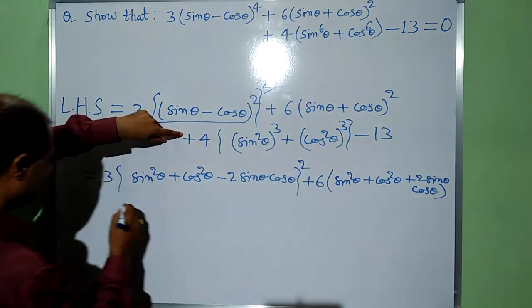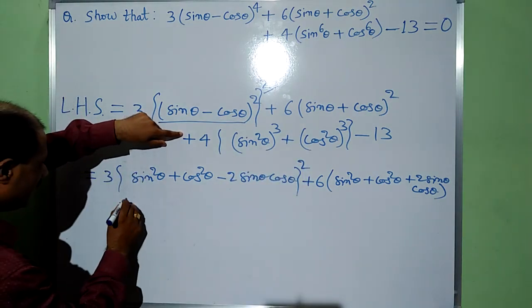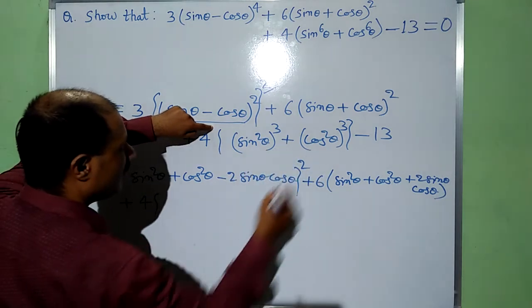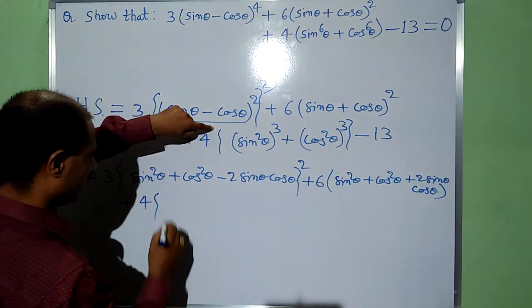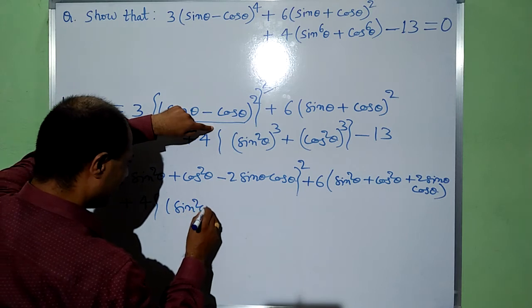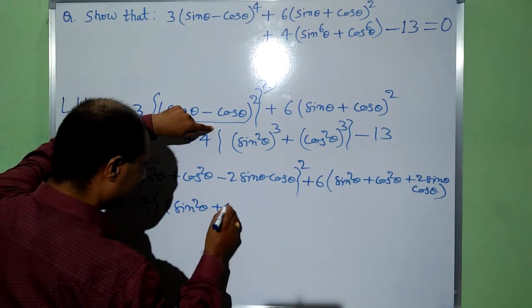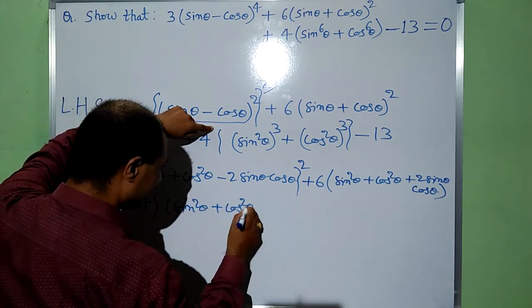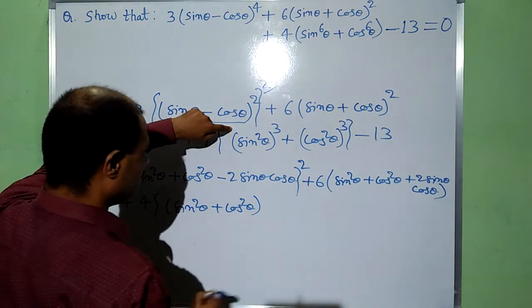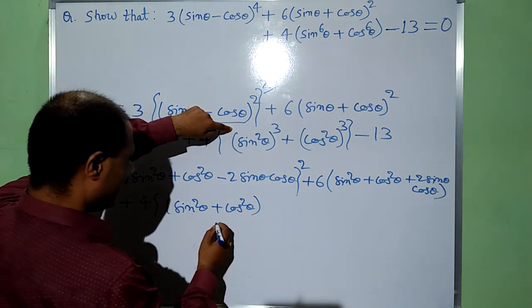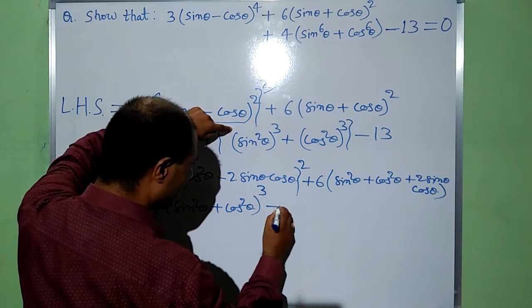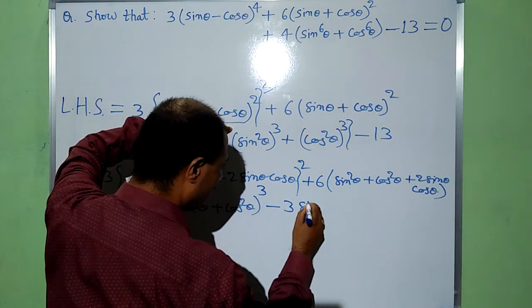Now we have to simplify plus 4 into a³ + b³. It will give us (a + b) — since a³ + b³ equals (a + b)³ minus 3a·b·(a + b).